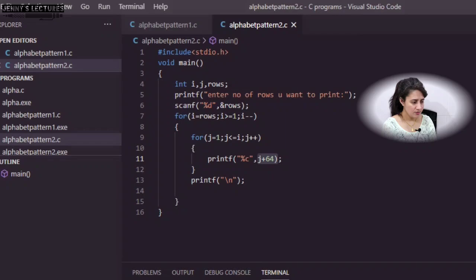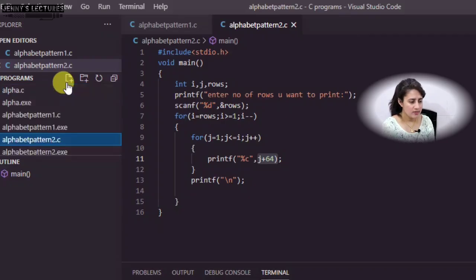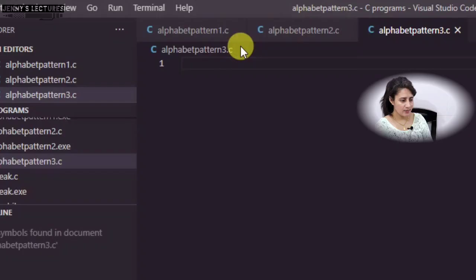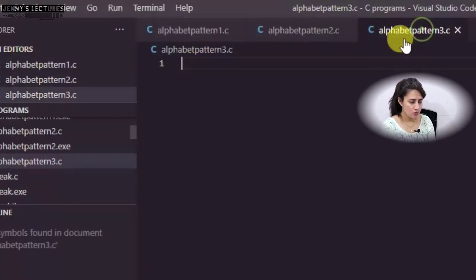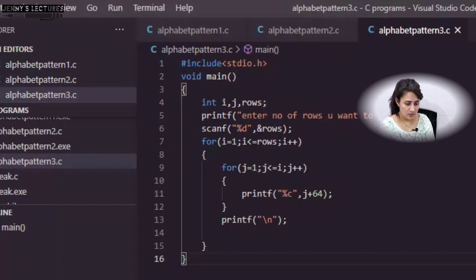Let me create another file for this. Alphabet pattern 3 dot C. This is actually same as the previous one, it is a little bit different. So I am just copying the previous code here, the pattern 1 code here. And whatever change you will do, that I will show you here, just to save the time. Let me clear this terminal first, the previous output.